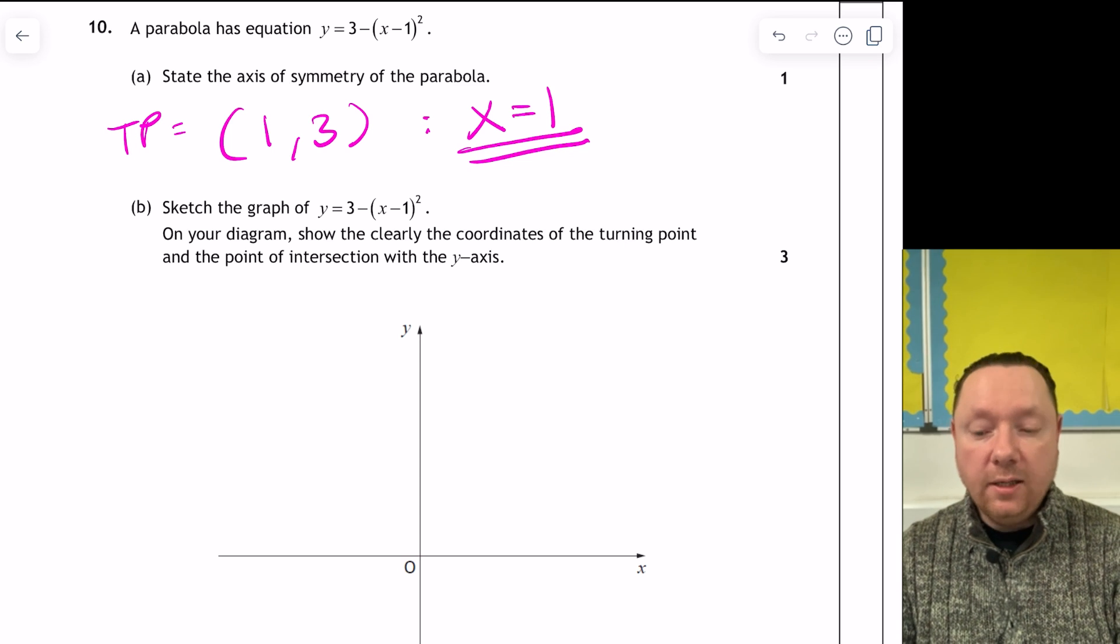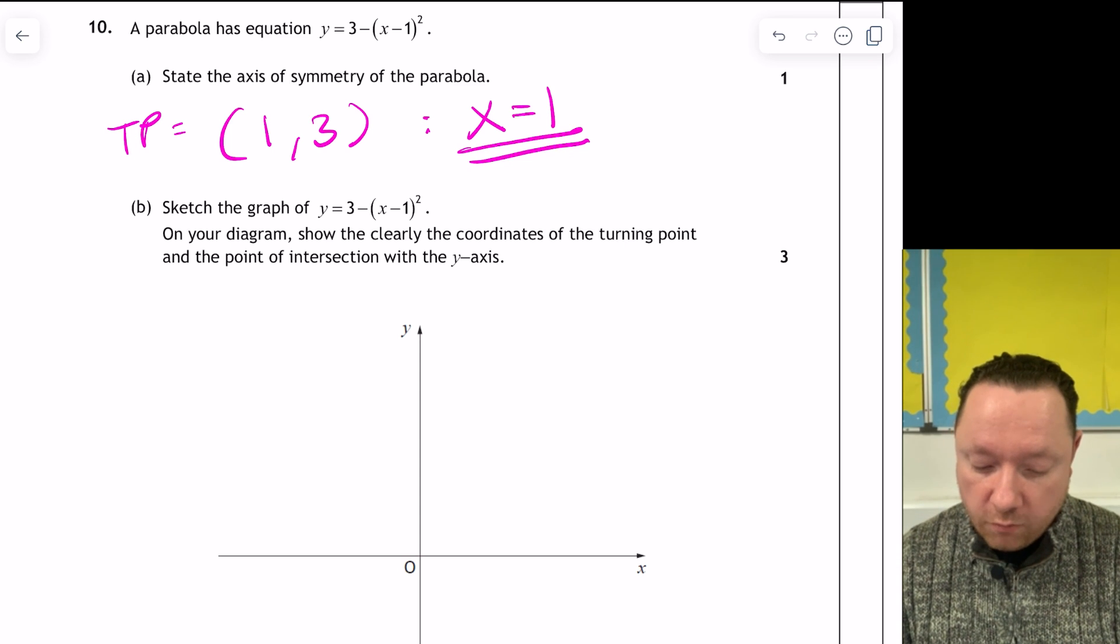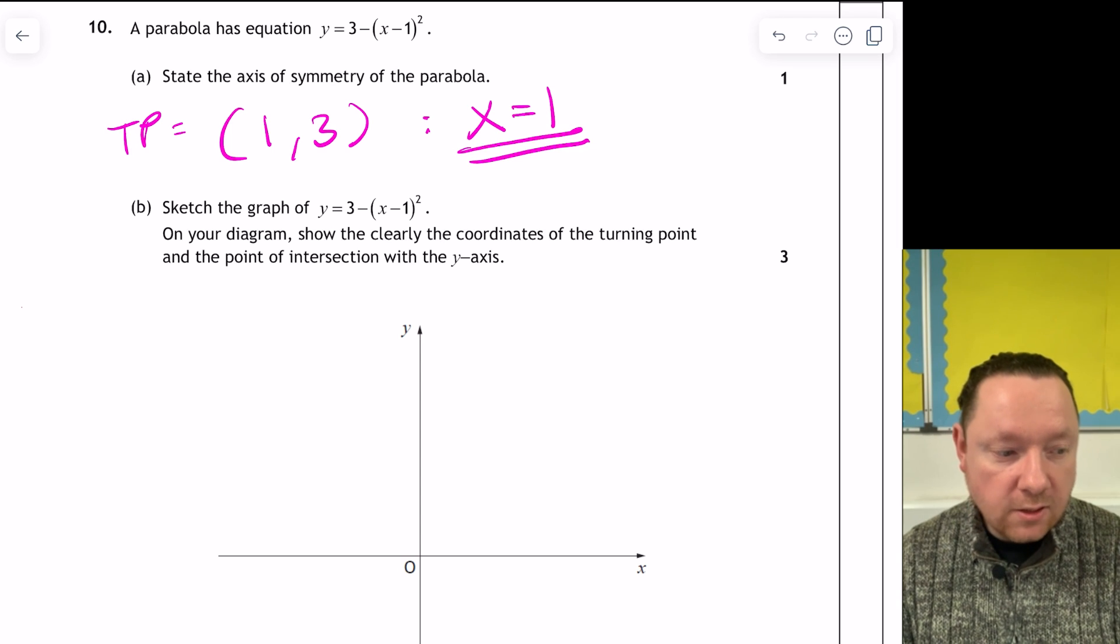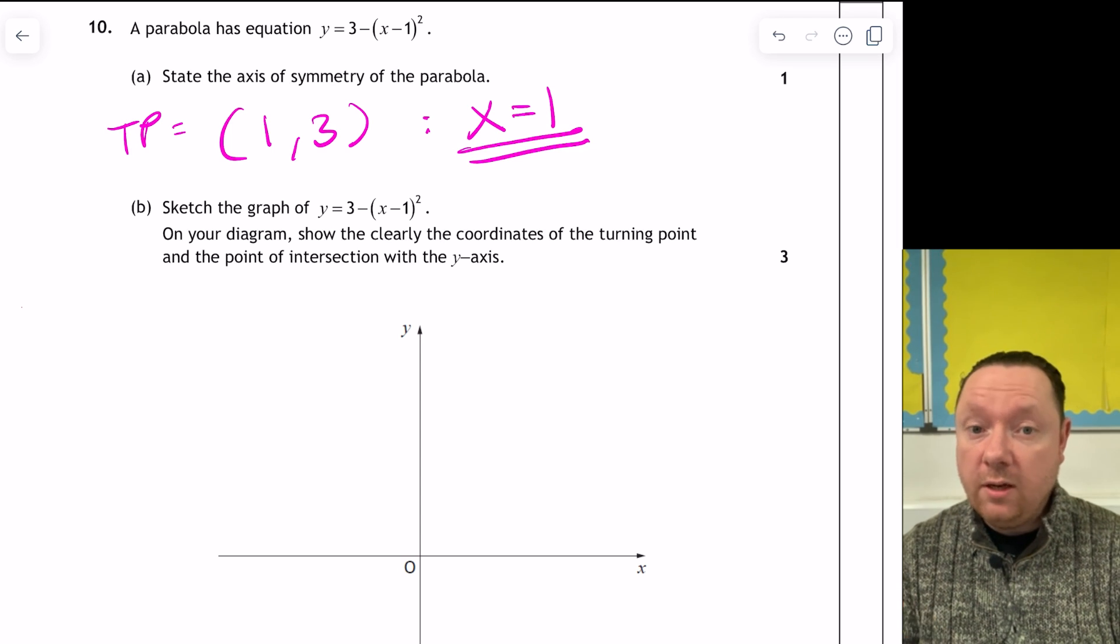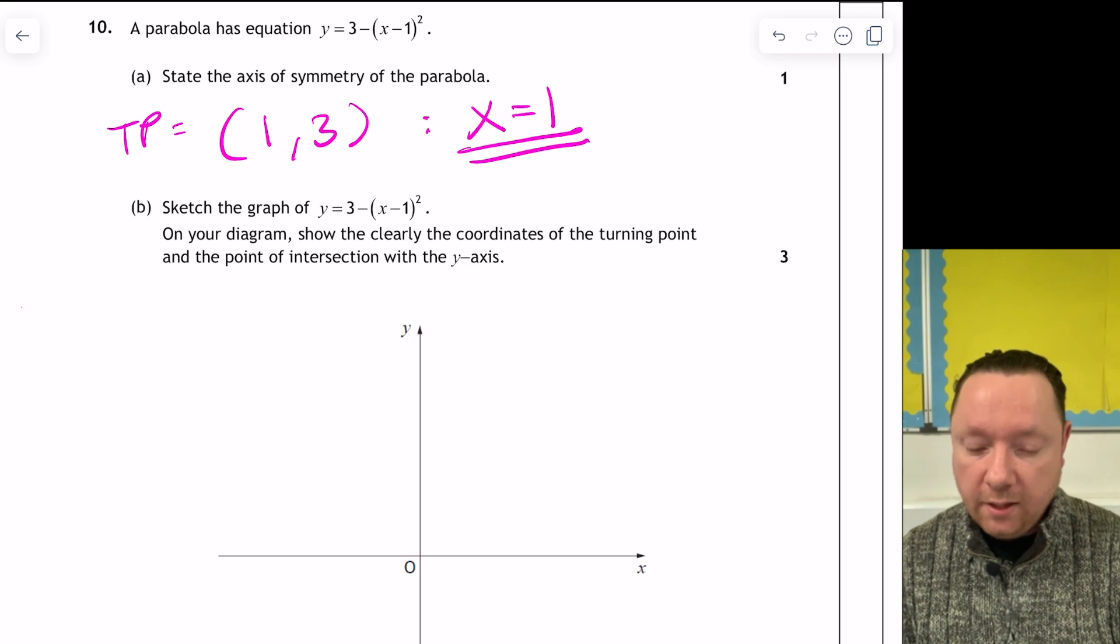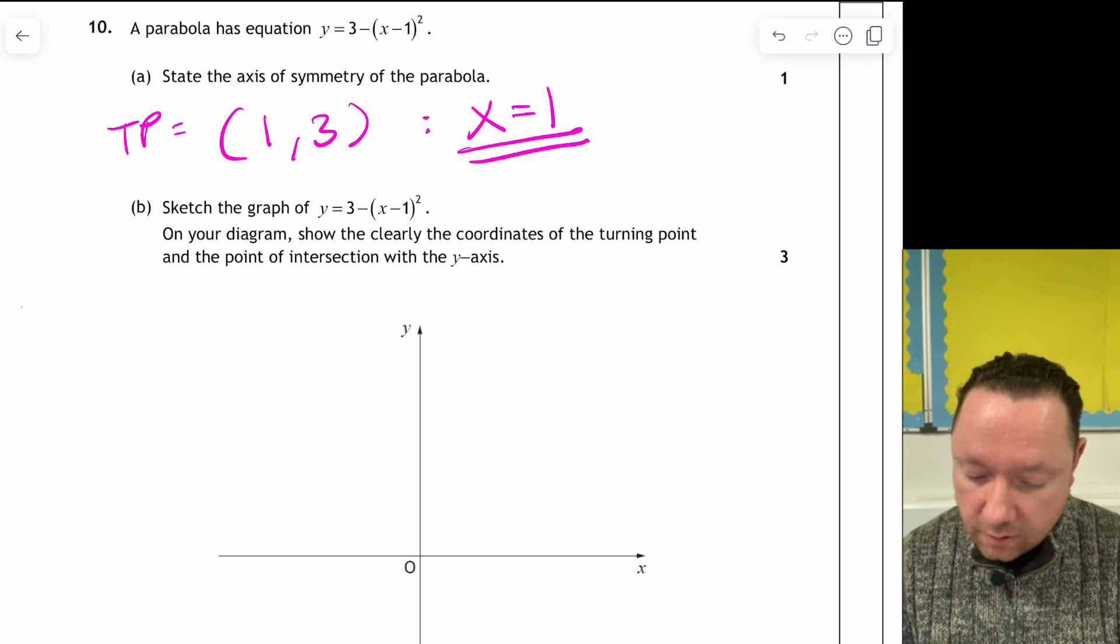Sketch the graph of 3 minus x minus 1 squared. On a diagram, show clearly the coordinates of the turning point and the point of intersection with the y-axis. So we're not bothered about the x-axis in this case. So I don't need to find the roots. But I need to find the y-axis and the turning point. Well, I've already done the turning point, 1, 3. I always do that.